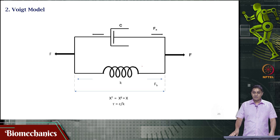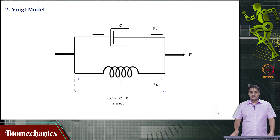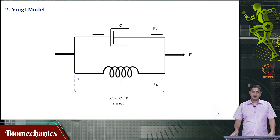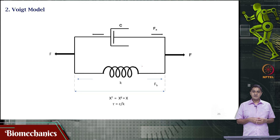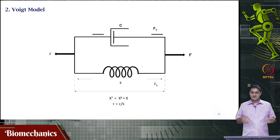This is the Voight model in which the dashpot is in parallel with the spring. Remember, in the Maxwell model we had the dashpot and the spring in series with each other. So the results and the response to applied stress or strain will be different between the Maxwell model and the Voight model, because in the Maxwell model these two were in series, and now they are in parallel.